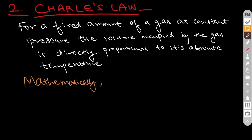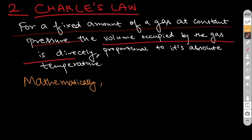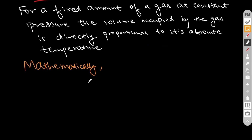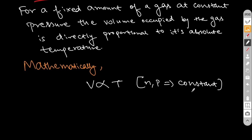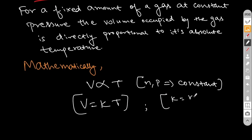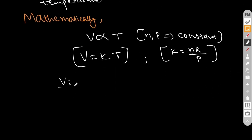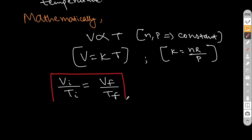Mathematically, when the amount of gas is fixed and the pressure is fixed, volume is directly proportional to its absolute temperature. So volume is directly proportional to temperature when moles and pressure are kept constant. This gives V = KT, where K is the constant whose value is nR/P. We can also write V_i / T_i = V_f / T_f, which is an important formula used frequently in Charles law, valid when moles and pressure are kept constant.